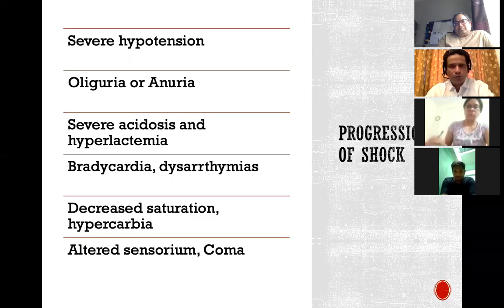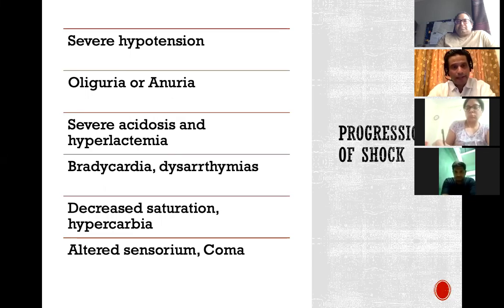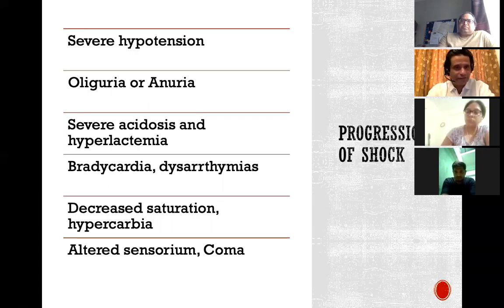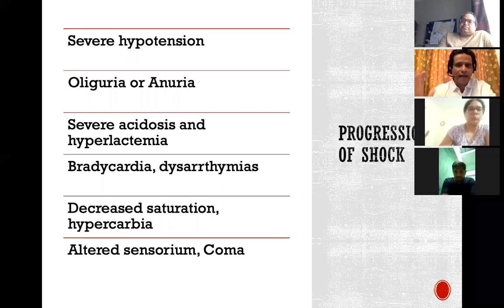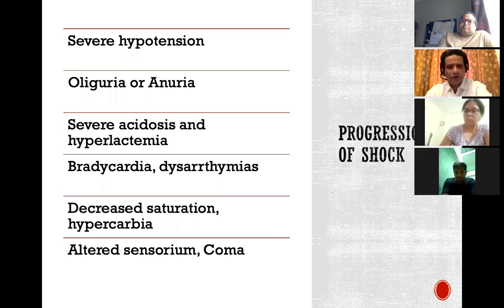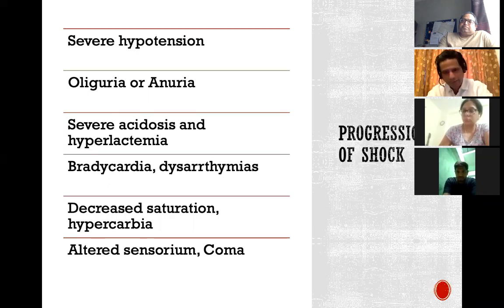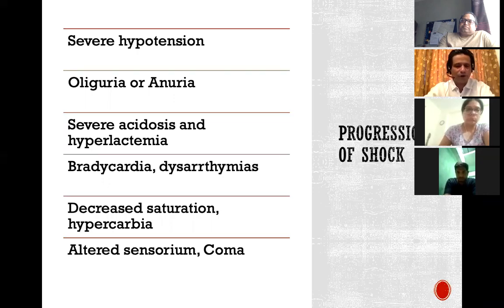As shock progresses, you start noticing blood pressure dropping — severe hypotension associated with oliguria and anuria. Severe acidosis ensues; the ECG shows dysrhythmias and bradyarrhythmias. Hypercarbia develops, pH comes down, the patient becomes increasingly acidotic, the brain gets affected, and you get altered sensorium and coma.